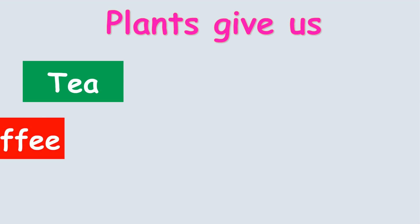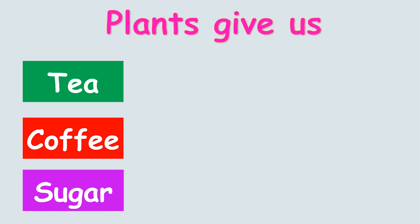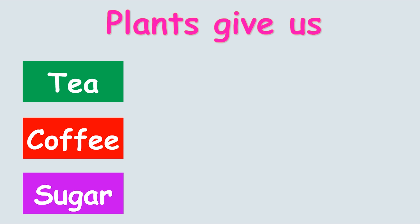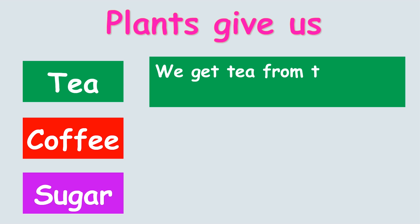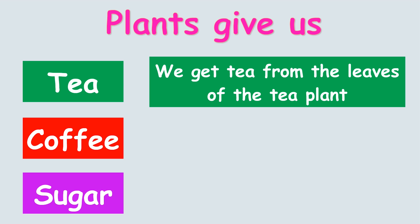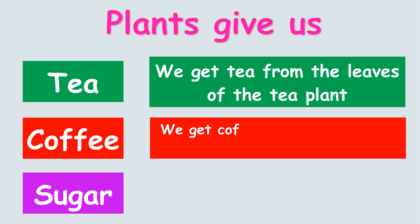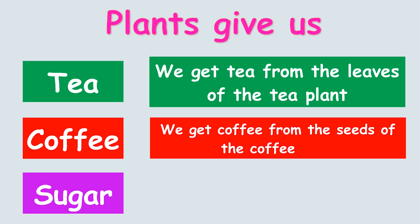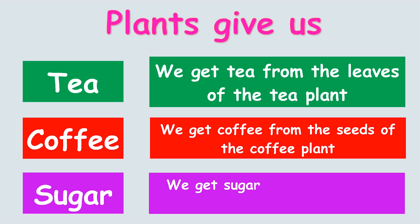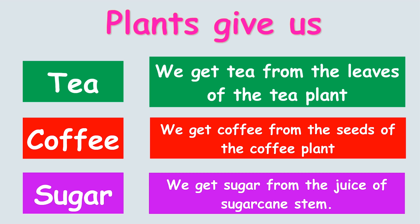Plants give us tea, coffee and sugar. We get tea from the leaves of the tea plant. We get coffee from the seeds of the coffee plant. We get sugar from the juice of sugarcane stem.